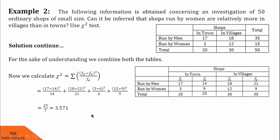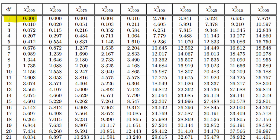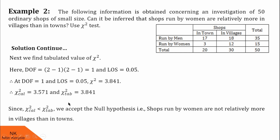Now, we proceed for the tabulated value. Here, there are two rows and two columns of information in the data table. Therefore, corresponding degrees of freedom is (2 minus 1) into (2 minus 1) is equal to 1. We will take LOS 5% and now we will see what is the tabulated value of chi-square at 1 degree of freedom and 5% LOS. I see at 1 degree of freedom and 5% LOS, chi-square value is 3.841. Now, finally, we compare chi-square's tabulated and calculated values. We see chi-square calculated value is less than chi-square tabulated value. Therefore, we should accept the null hypothesis, which means shops run by women are not relatively more in villages than in town.